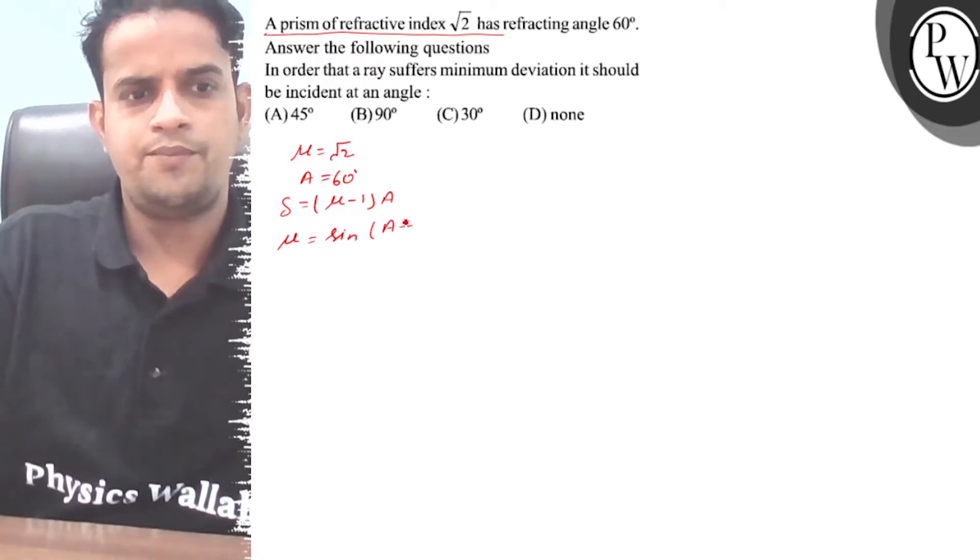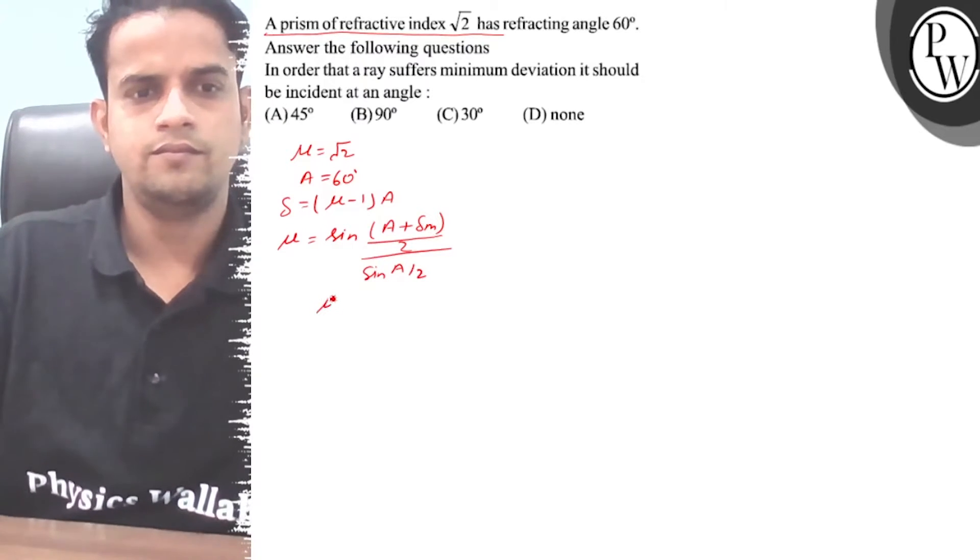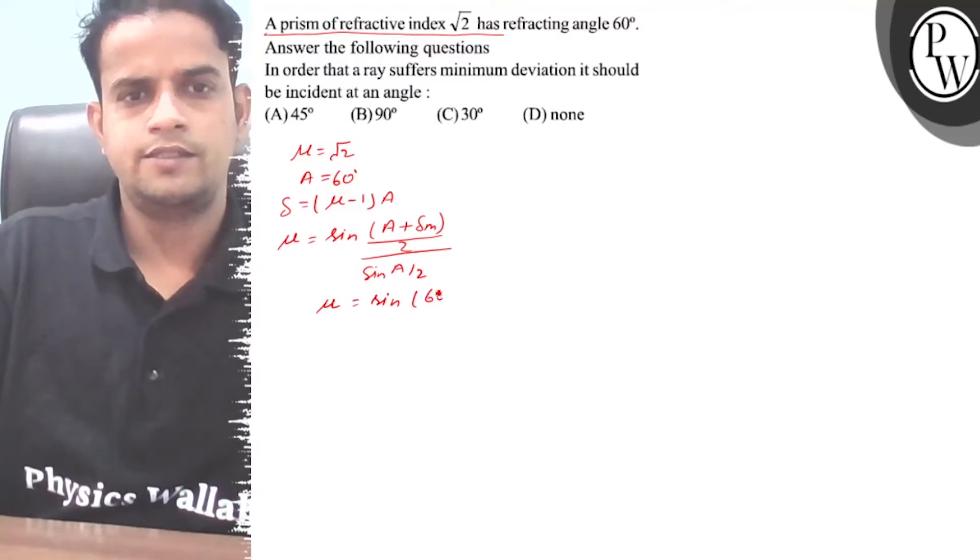This is the formula. So sin of (60 plus δm) divided by 2, divided by sin 60 by 2.